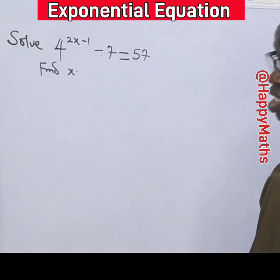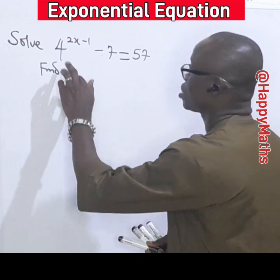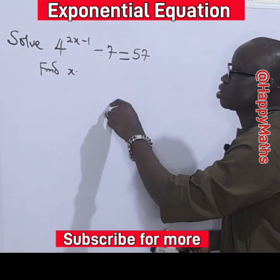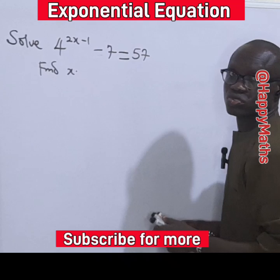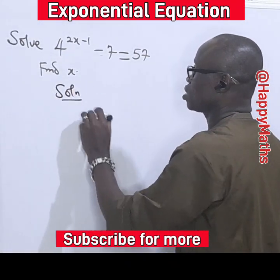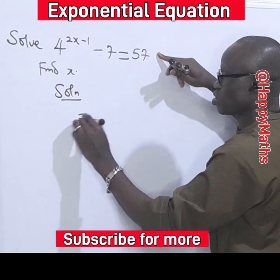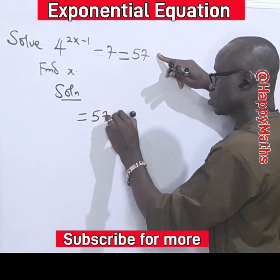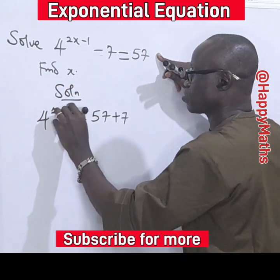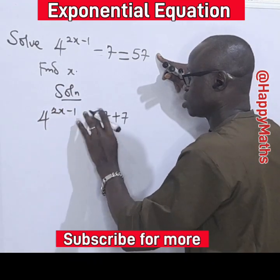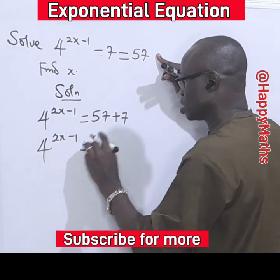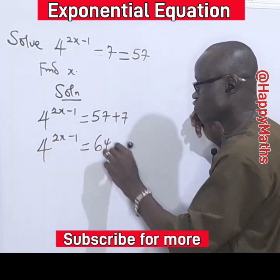Here is another interesting exponential equation: 4 raised to the power of 2s minus 1, minus 7, equals 57. The first thing we do is transpose the 7, giving us 4 raised to the power of 2s minus 1 equals 57 plus 7, which gives us 64.